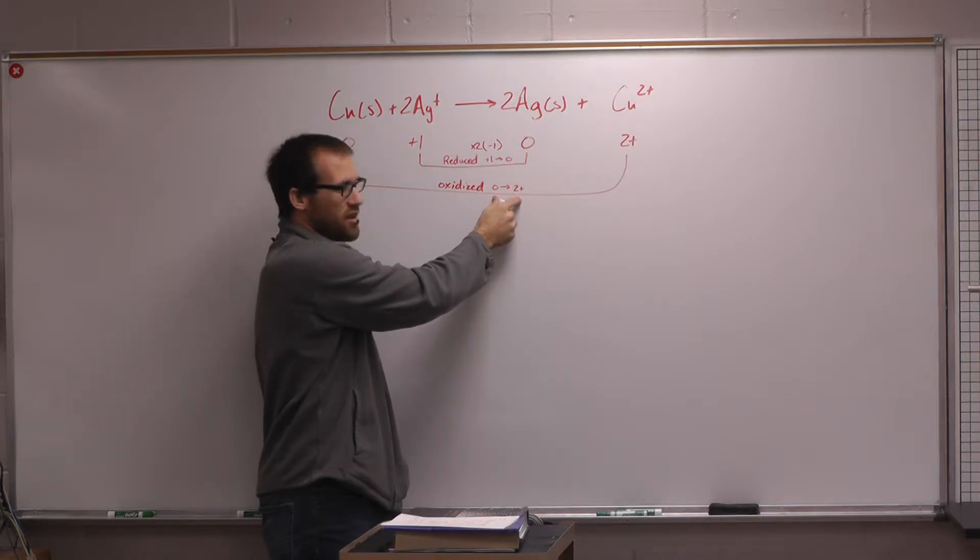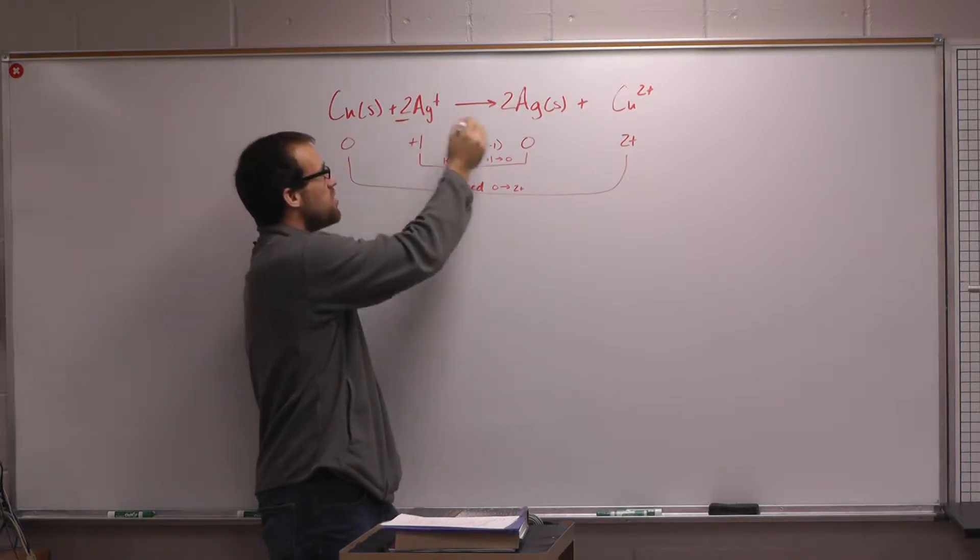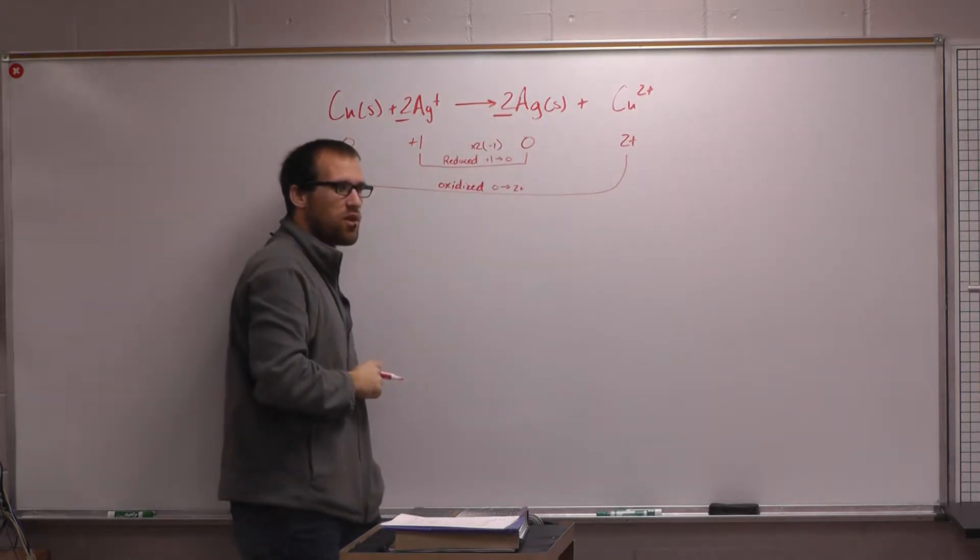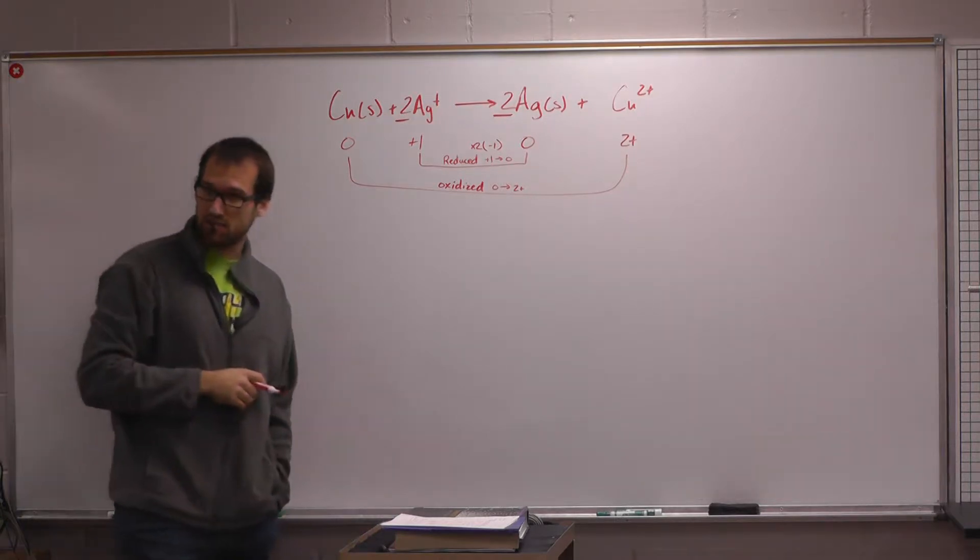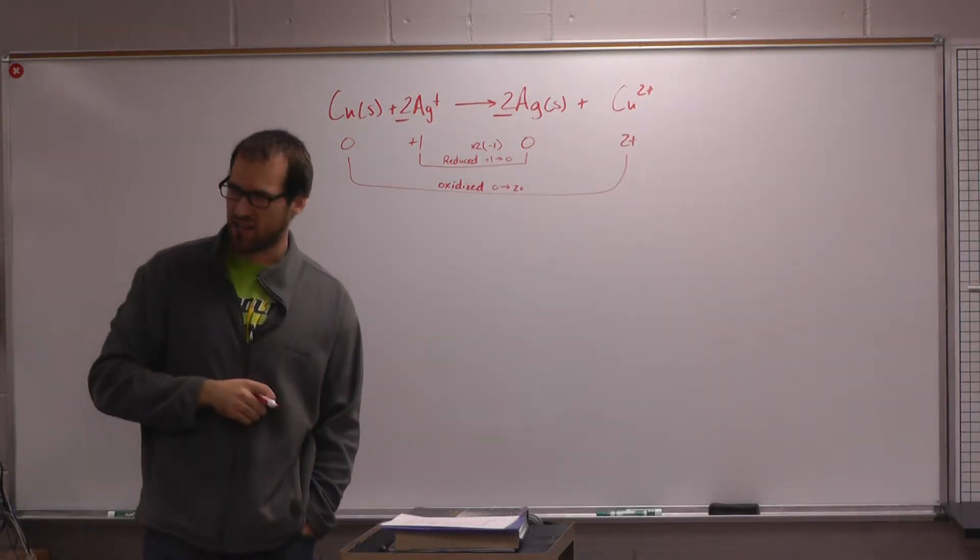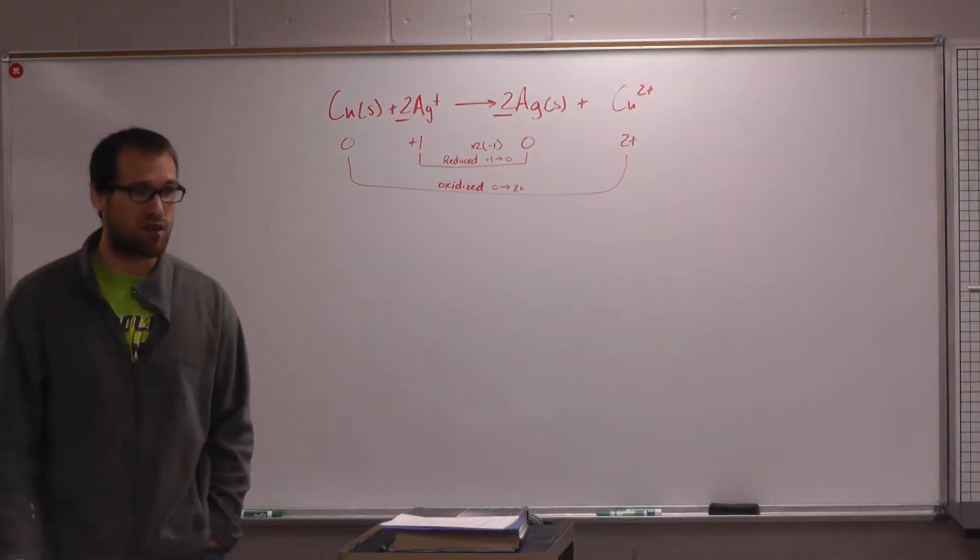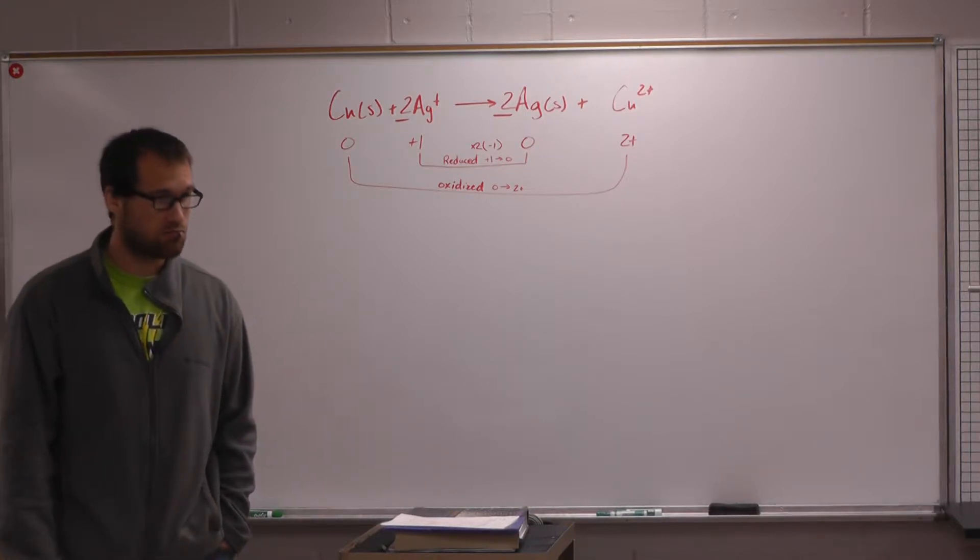And the one that gets reduced is the oxidizing agent. So this goes from one plus to zero. This goes from zero to two plus. Do you see my problem here? If you look, I gained one electron here, but I lost two electrons here. If that's the case, I need these two differences in oxidation numbers to match up.